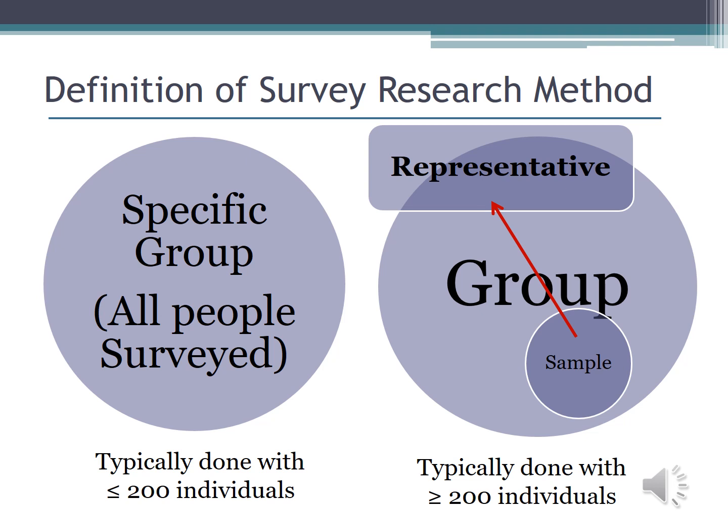Say I want to know what my 100-person film appreciation class thinks about a movie I just showed. It's easy enough to give all 100 students a survey and input that data into SPSS for analysis. Entering data from 100 students is going to be a little time consuming, but it really is mundane data entry, so it's not like I have to do a whole lot of critical thinking. In this case, I would go ahead and survey the entire population.